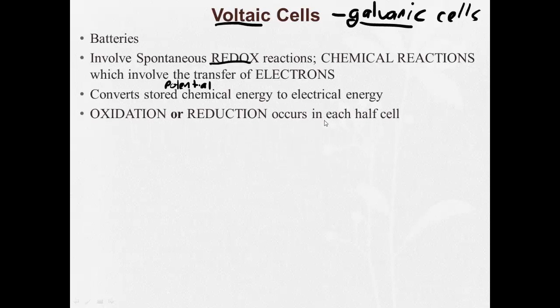In a voltaic cell, we're going to have two half cells making up the entire cell. There's two half cells. And in one half cell, oxidation occurs. In the other half cell, reduction occurs.